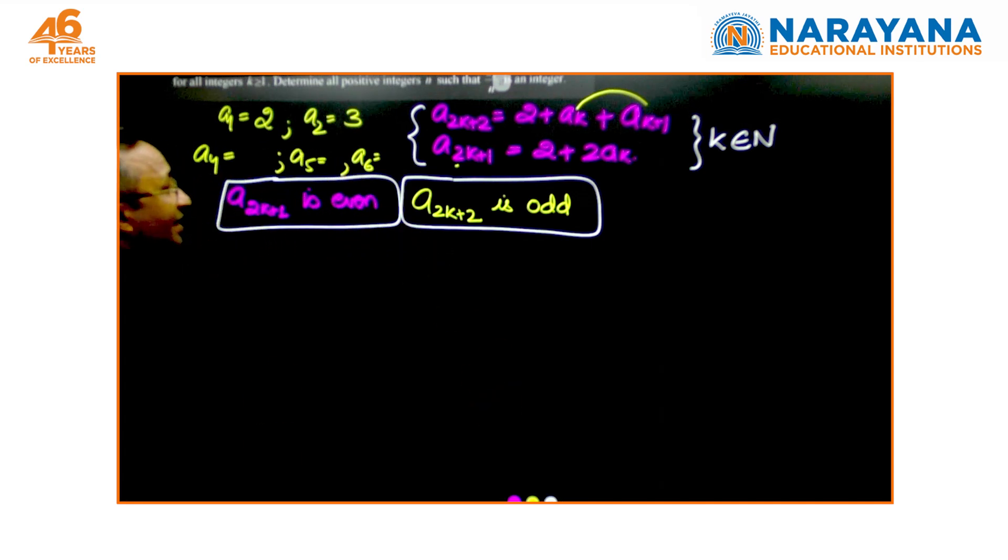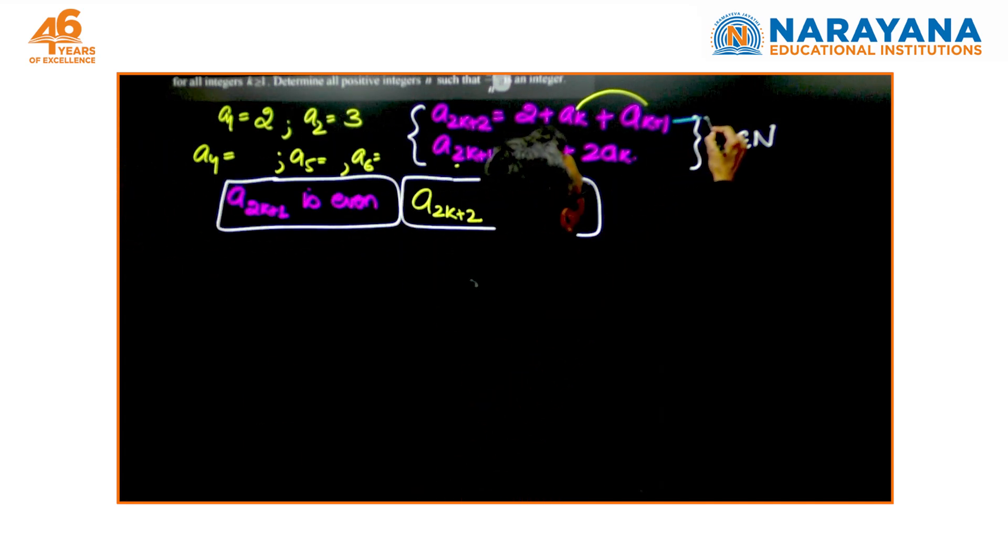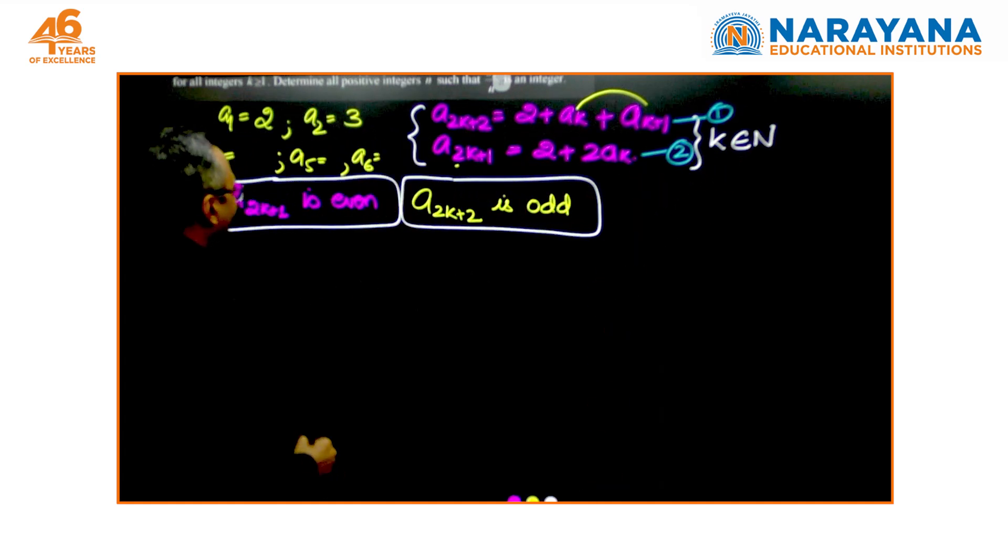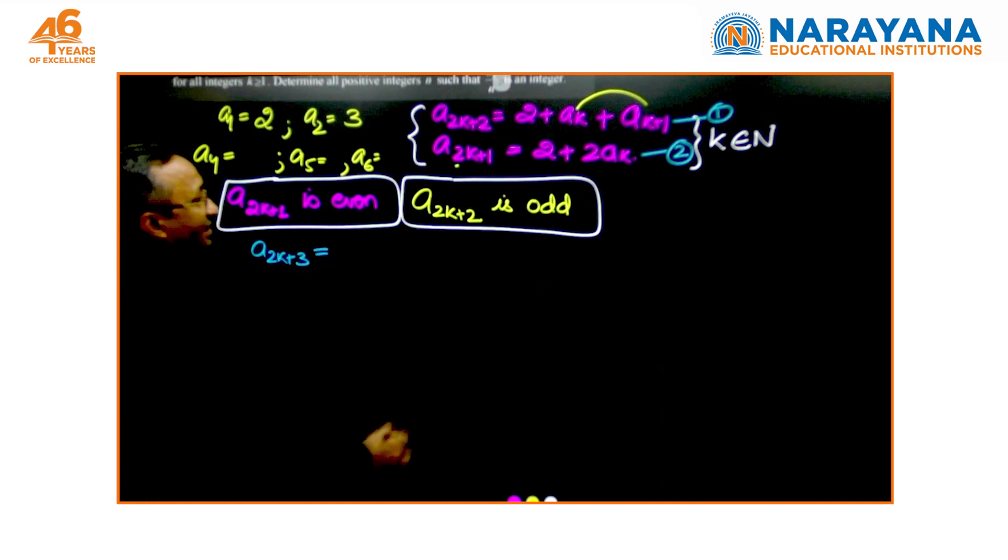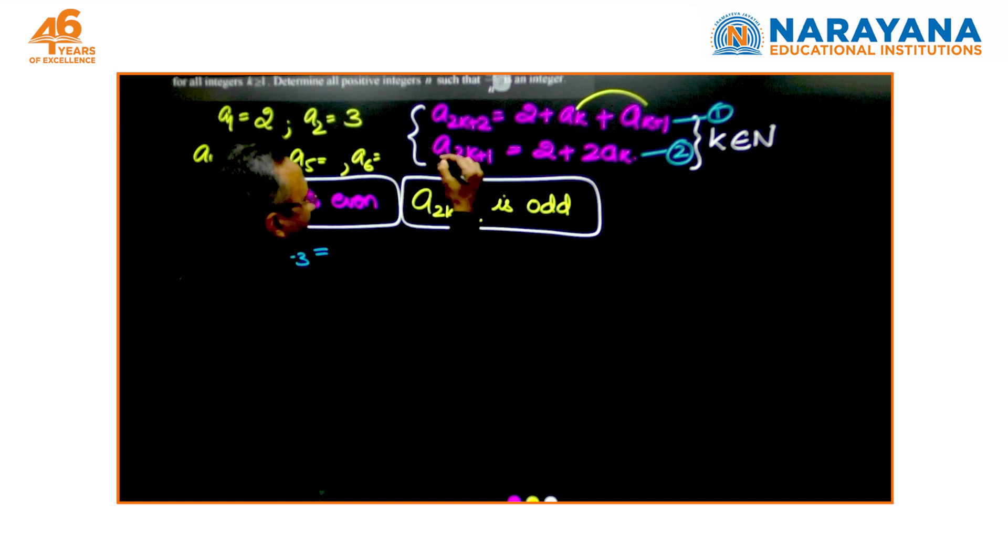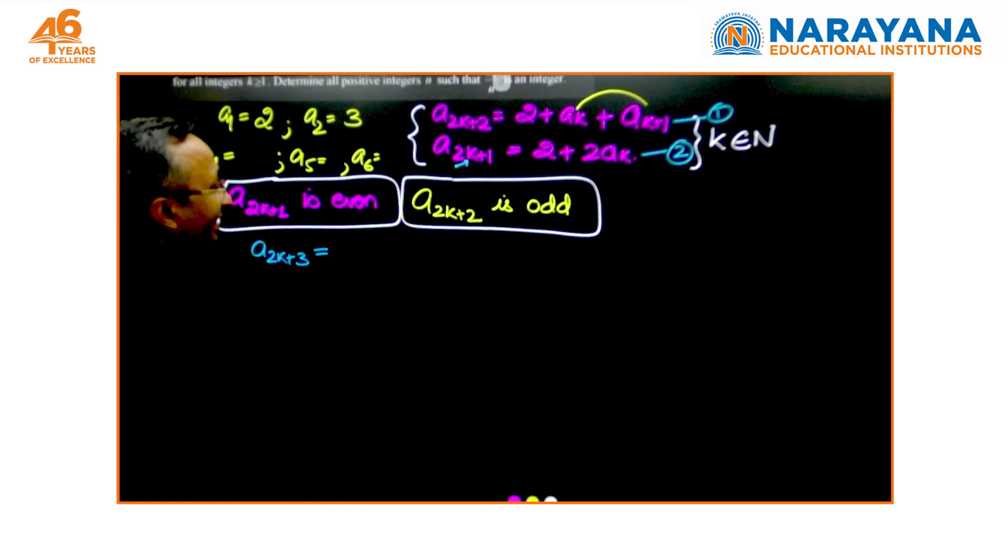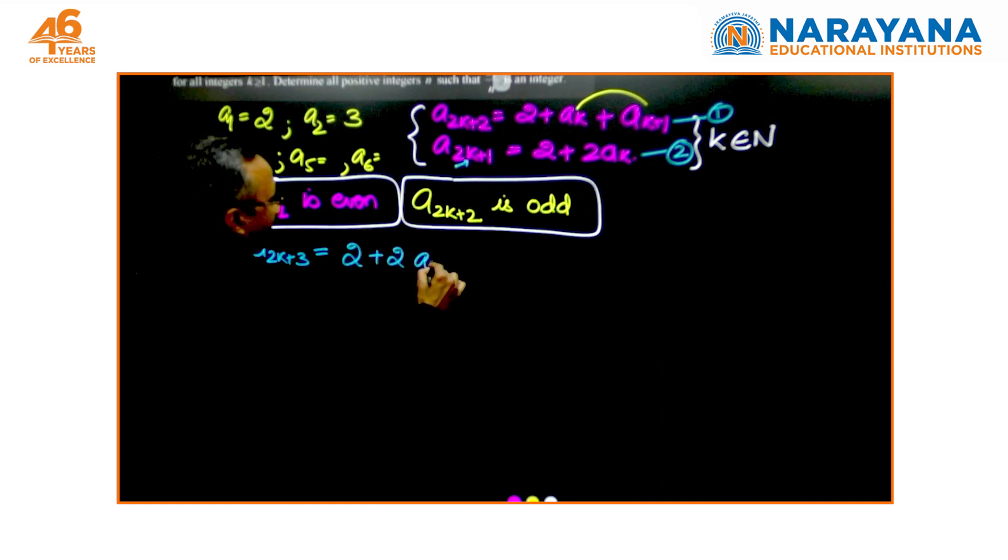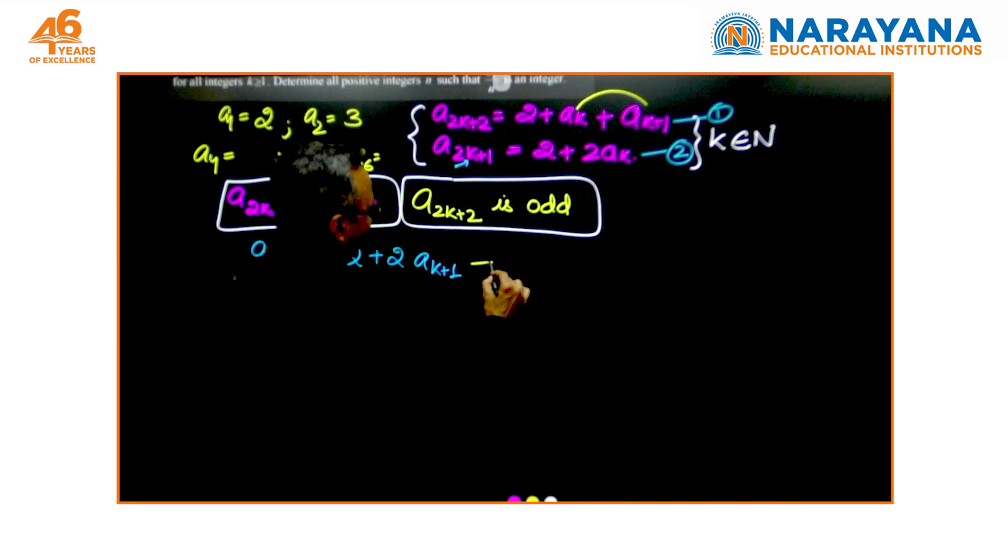The other would be: how do I realize what value I am going to take? I start writing these two equations. This is equation number one, this is equation number two, and let me write a_{2k+3}. I write k as k+1 in the second equation. This becomes 2k+3, so this becomes 2 times 2a_{k+1}. Let me call this equation as the third equation.